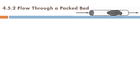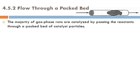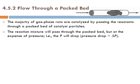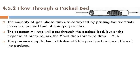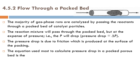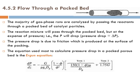The majority of gas phase reactions are catalyzed by passing reactants through a packed bed of catalyst particles. The reaction mixture passes through at the expense of pressure — there is a pressure drop. The pressure drop is due to friction produced at the surface of the packing. More surface area exists because friction occurs not just at the tube wall but at each particle surface. The equation used to calculate pressure drop in a packed porous bed is the Ergun equation.